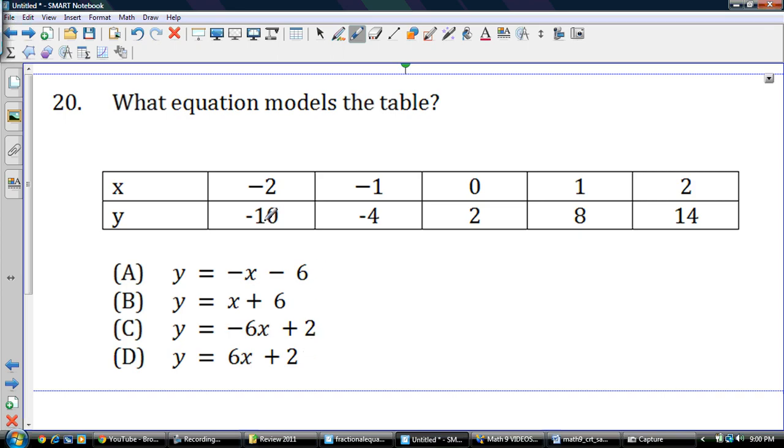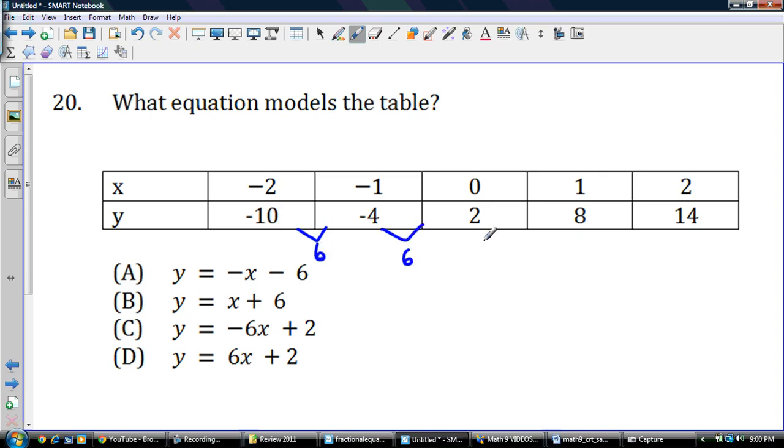We're looking at what equation models the table. We got x's going up by 1, so we're good. And we have the y's here. Here they are going down by 6. Actually, they're going up by 6, sorry. So going up by 6, going up by 6, going up by 6.